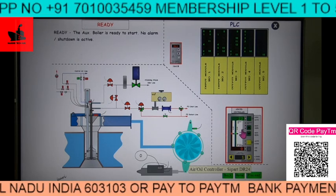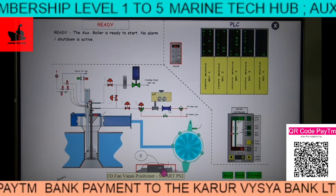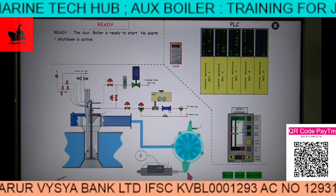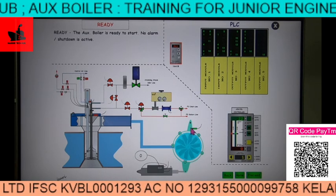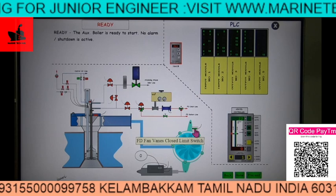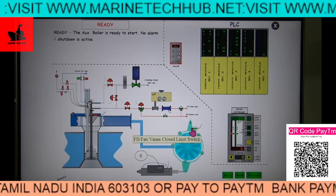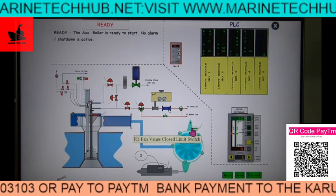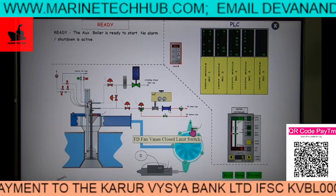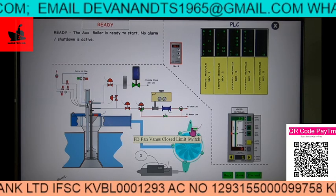Another component is the FD fan vane positioner, also made by Siemens. When the FD fan is moving, the spindle will move and indicate the position — whether the FD fan is in the closed position or not. There is a component called the FD fan main limit switch. This limit switch will confirm the fan is in the closed position, because the FD fan will start only in the closed position, not in the open position. This interlock is kept to reduce the starting current. Once the fan starts, it will begin to open slowly after purging.